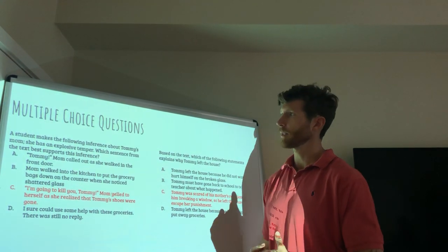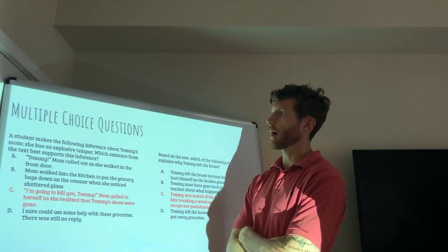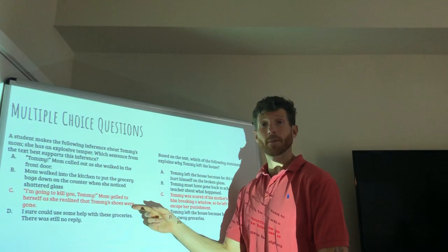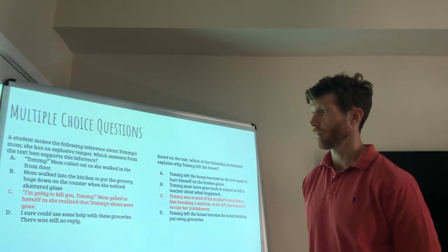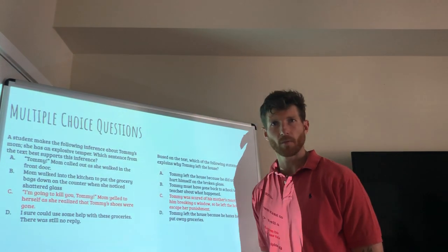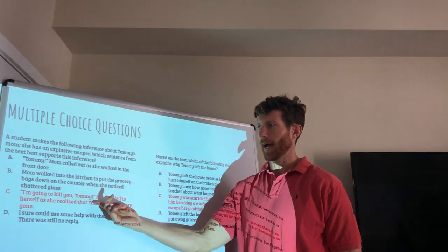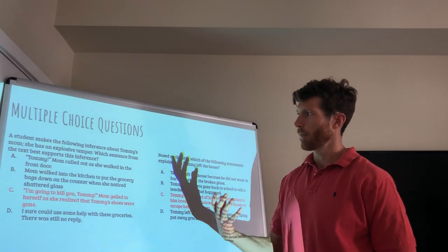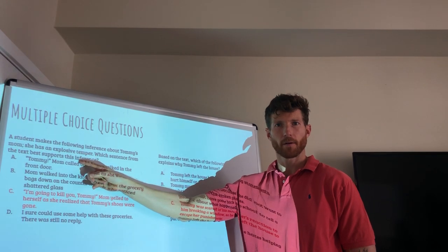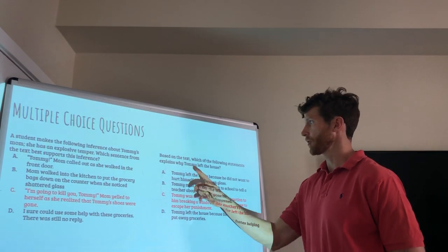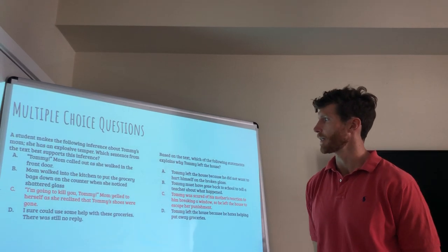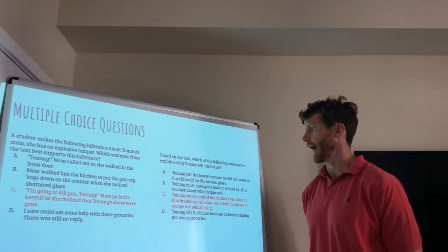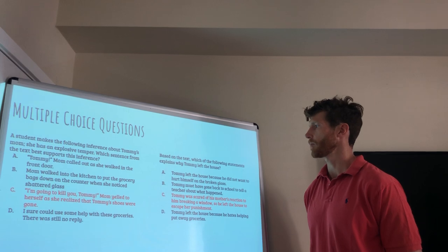Moving on to the multiple choice questions. A student makes the following inference about Tommy's mom — she has an explosive temper. Which sentence from the text best supports this inference? The answer is C: 'I'm going to kill you, Tommy,' mom yelled to herself as she realized Tommy's shoes were gone. That dialogue lets us make the inference that Tommy's mom has an explosive temper. For the next question — based on the text, which of the following statements explains why Tommy left the house? The correct answer is C: Tommy was scared of his mother's reaction to him breaking a window, so he left the house to escape punishment.